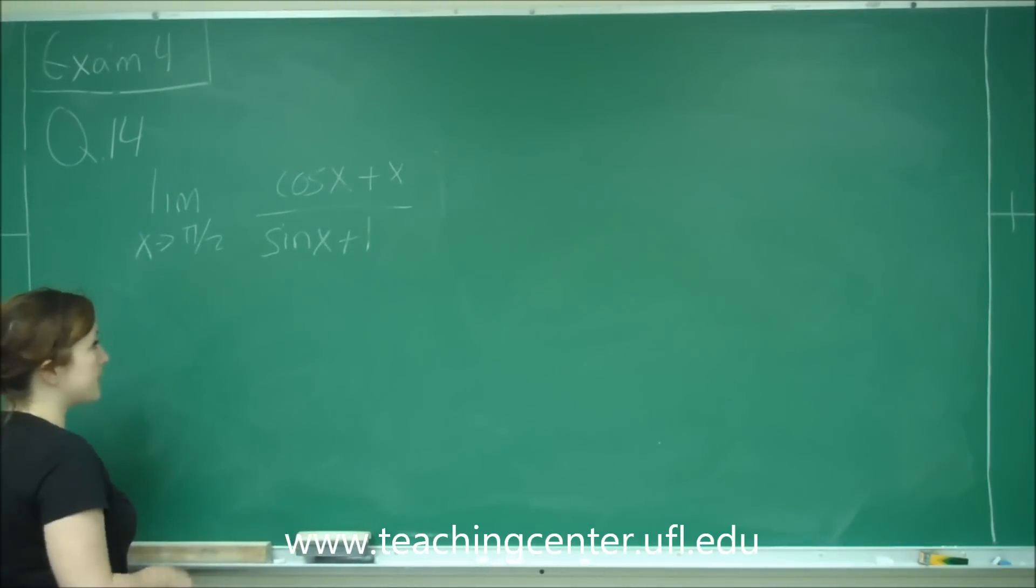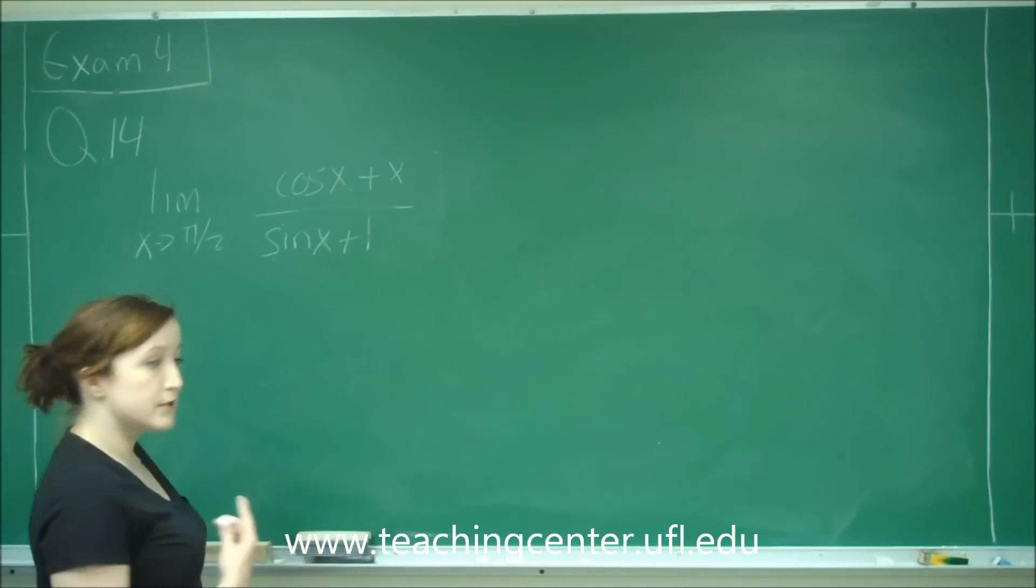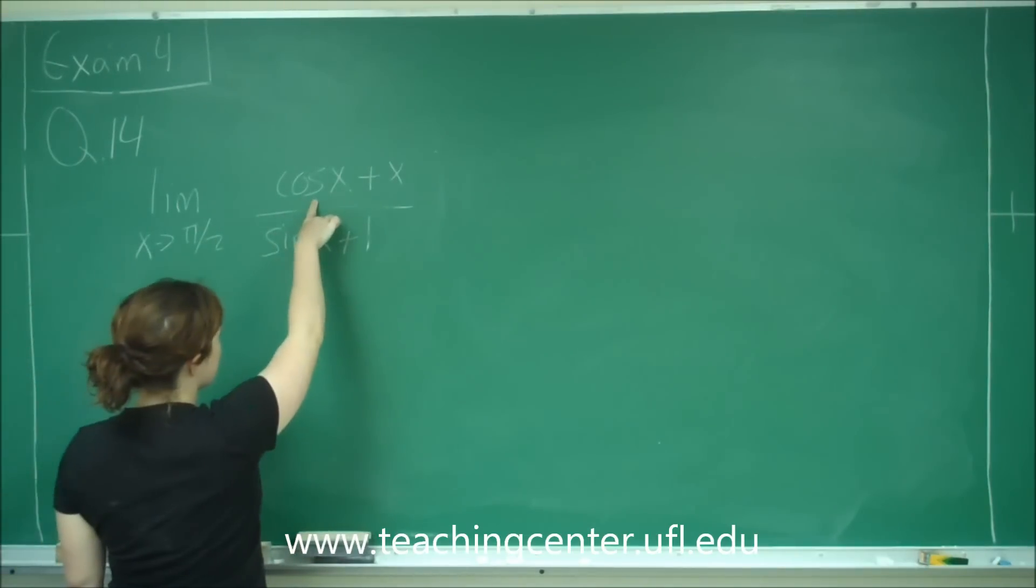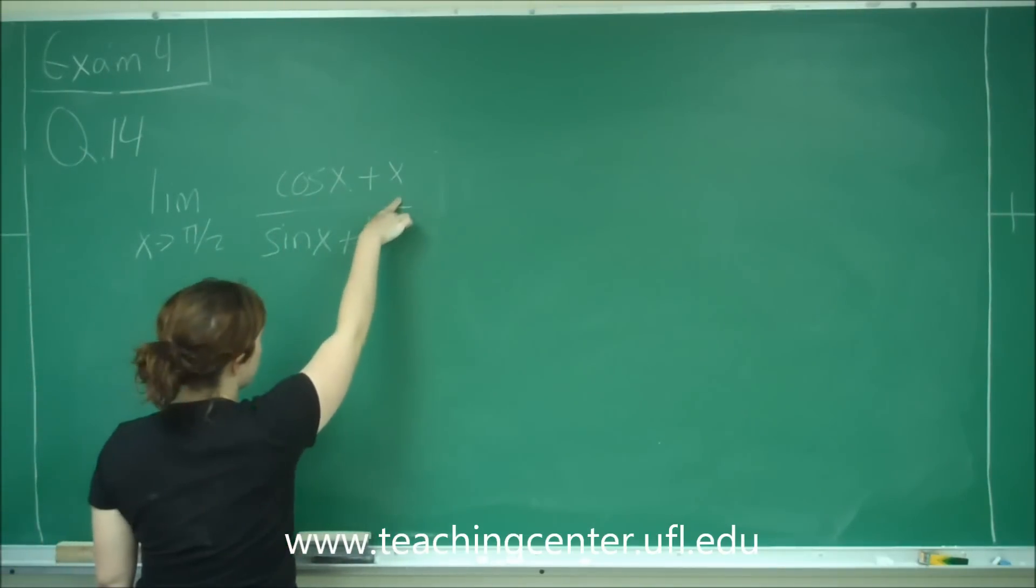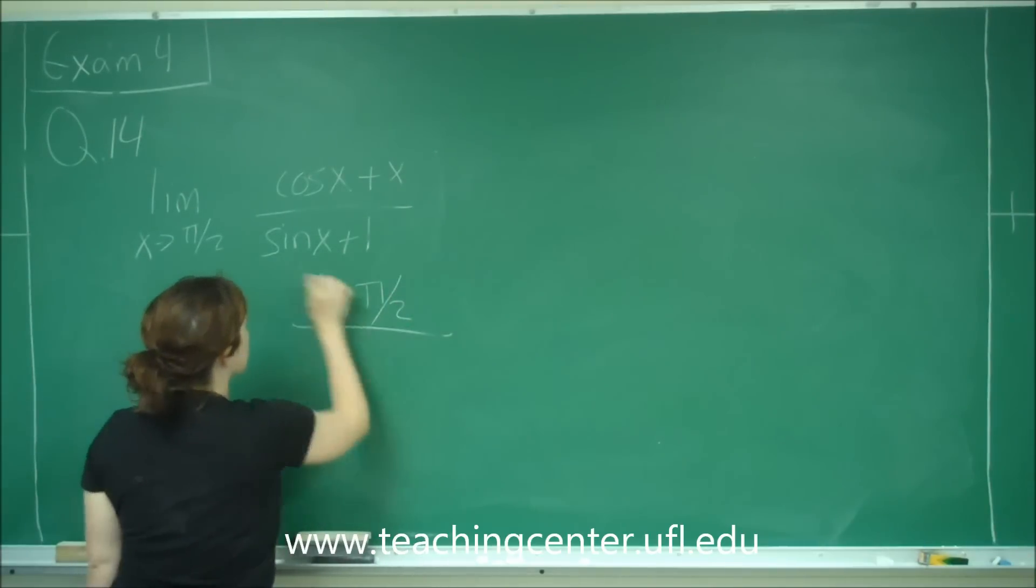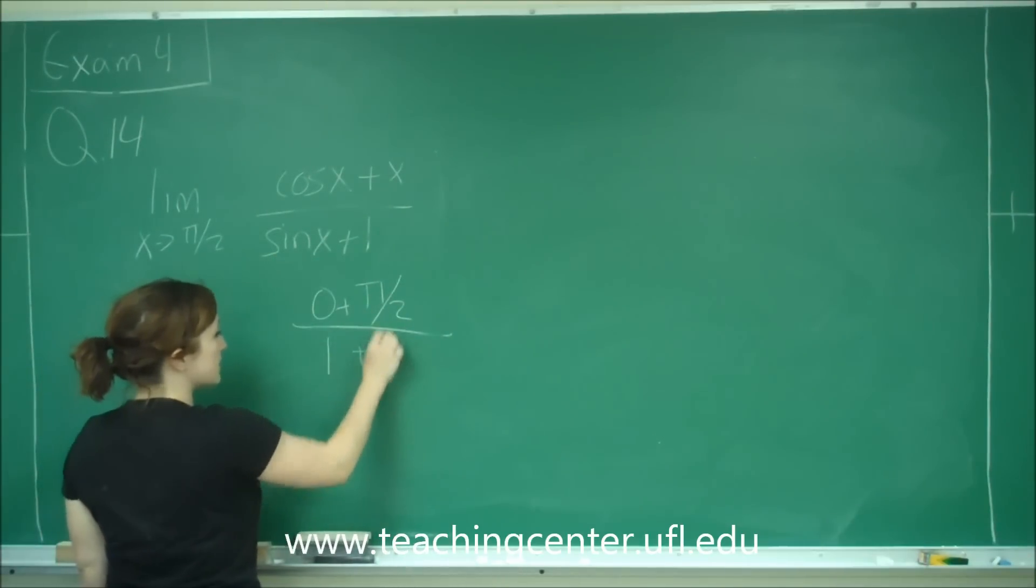And people maybe just automatically think, oh well, this probably doesn't work, so I need to do L'Hôpital's rule, but that's not true, because cosine of pi over 2 is 0 plus pi over 2, so we've got pi over 2 on top, over sine of pi over 2 is 1 plus 1.